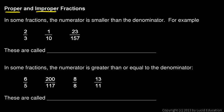In a lot of fractions, the numerator, the number on top, is smaller than the denominator, and that's the case in all of these. 2 is smaller than 3, 1 is smaller than 10, and 23 is smaller than 157.